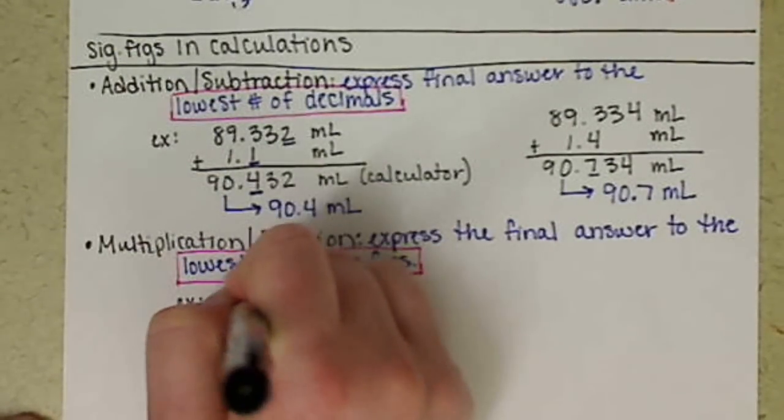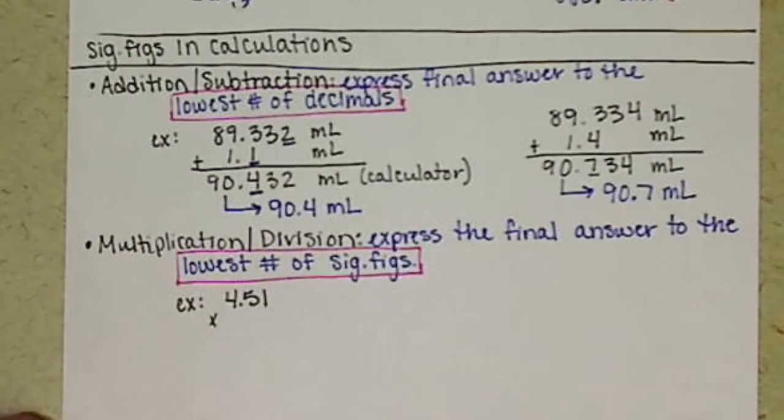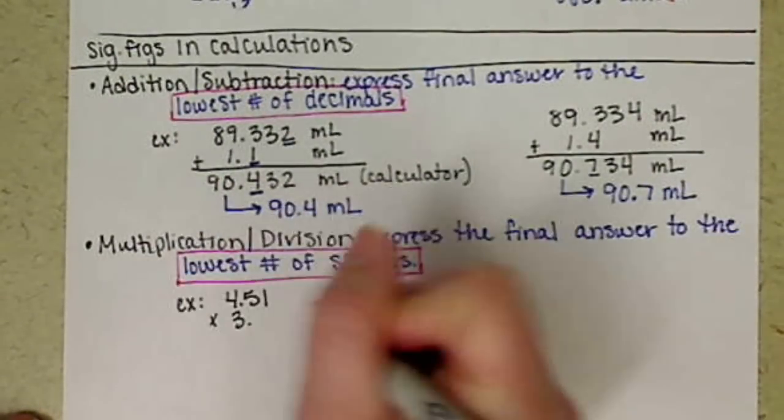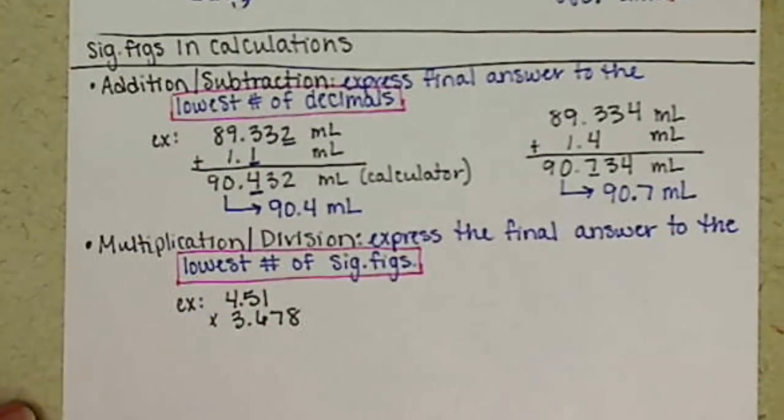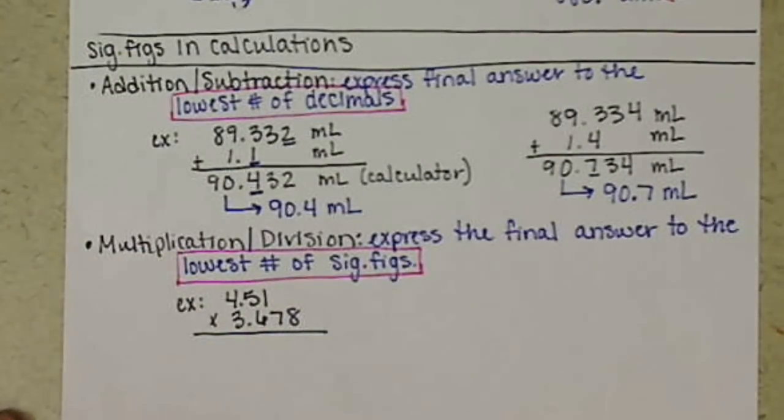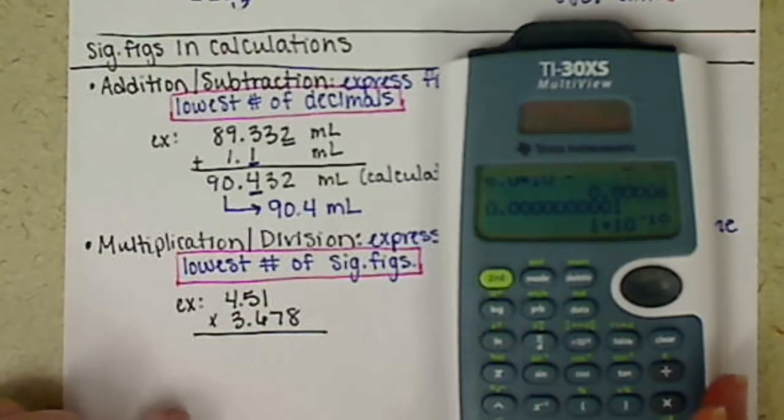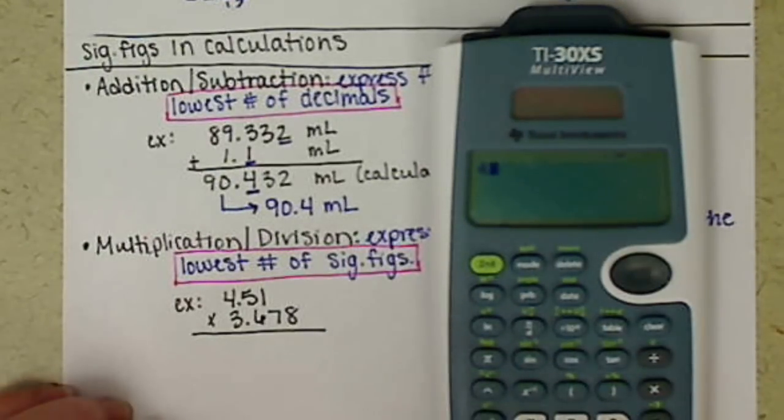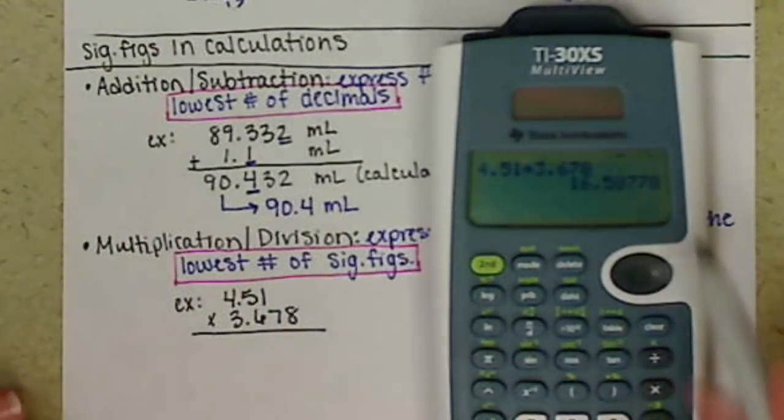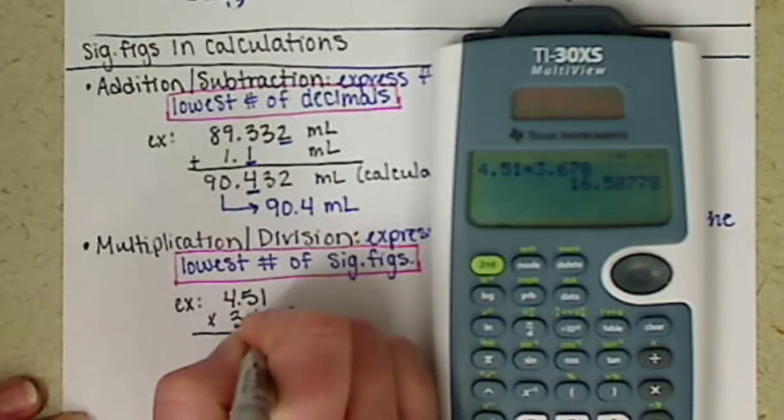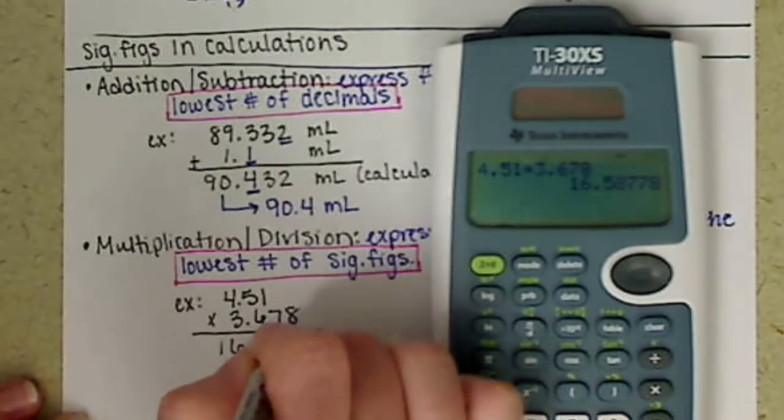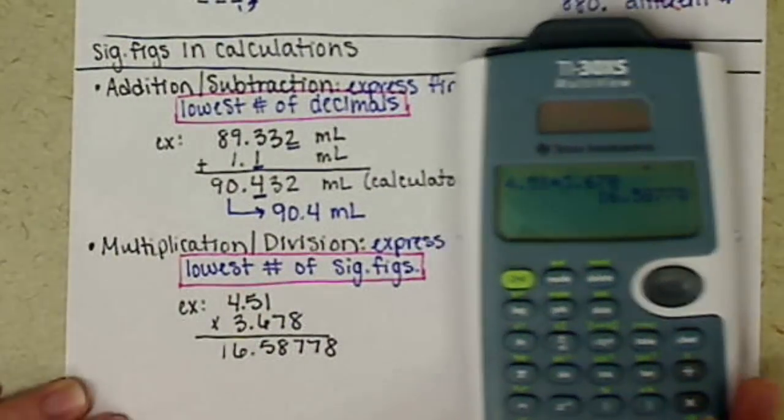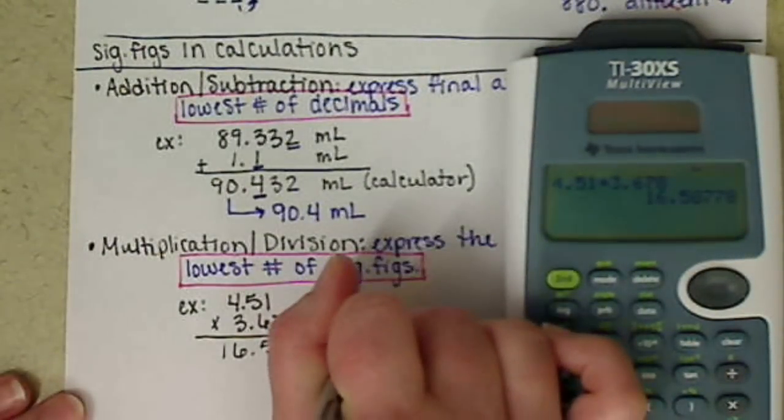All right, so if we look at an example, if we take 4.51, and let's multiply it by 3.678, seems like a good number. If we were to plug this into our calculator, let me grab my calculator here, we have 4.51 times 3.678, my calculator is giving me 16.58, what is that, 778. This is what my calculator gives me.